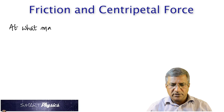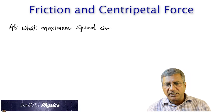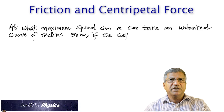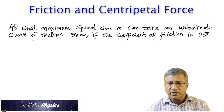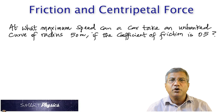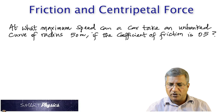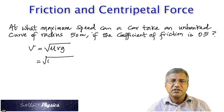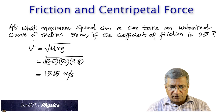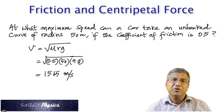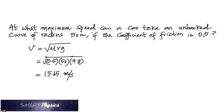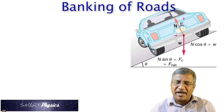Example: At what maximum speed can a car take an unbanked curve of radius 50 m if the coefficient of friction is 0.5? Using v = √(μrg) = √(0.5 × 50 × 9.8) = 15.65 m/s. That's the maximum safe speed on that particular curve.